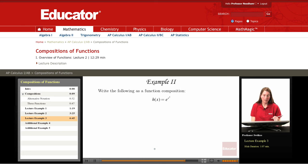So let's look at another example. Here we'd like to look at the function h(x) equals e to the x squared. And this is actually a composition of just two functions.